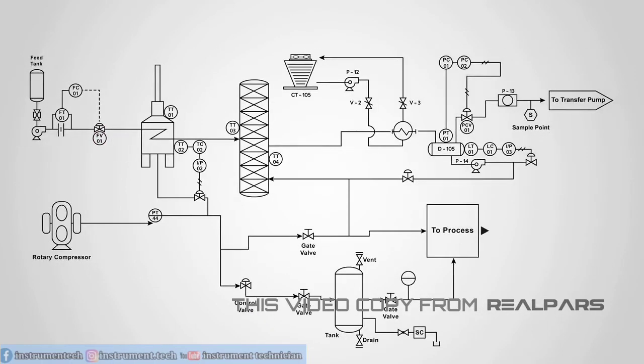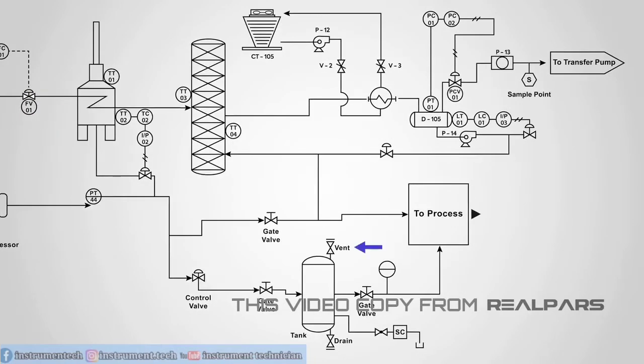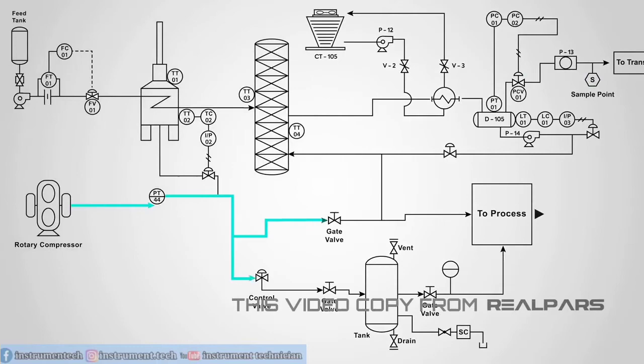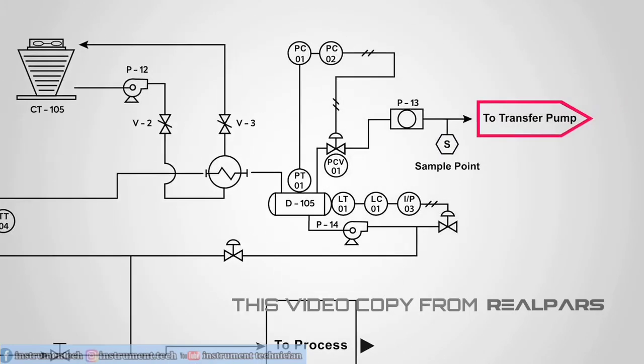As well as devices and pipelines, a PNID will commonly contain information on vents, drains, and sampling lines as well as flow directions, control I/O, and interconnection references.